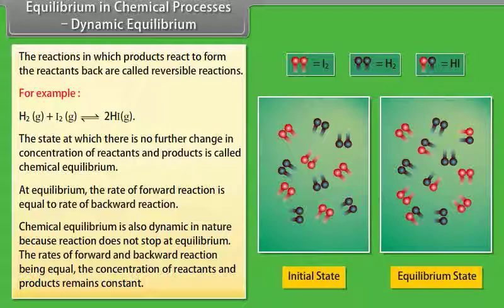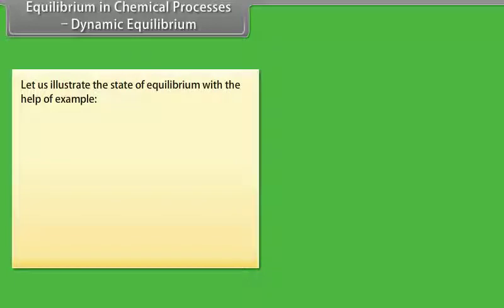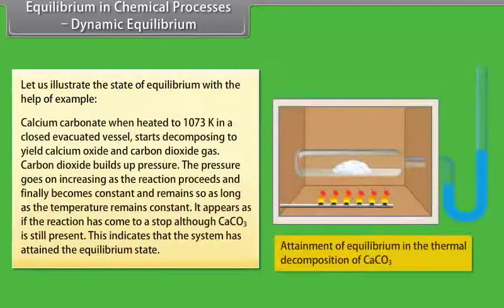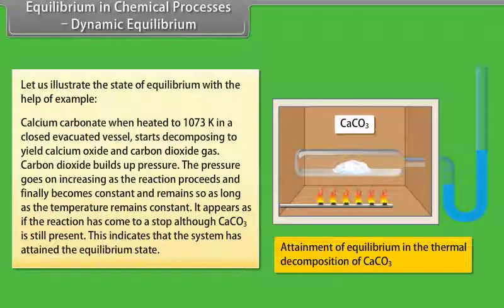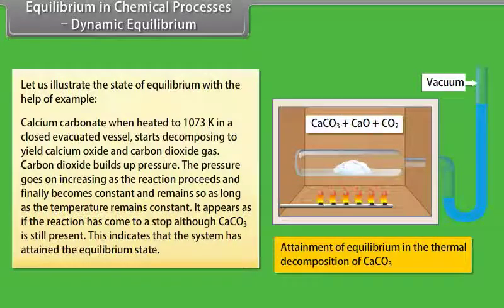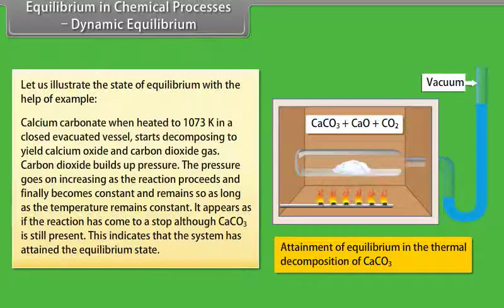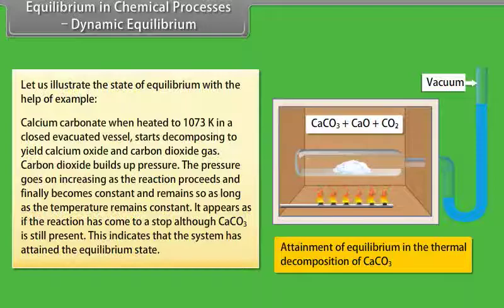The rates of forward and backward reaction being equal, the concentration of reactants and products remains constant. For example, calcium carbonate, when heated to 1073 Kelvin in a closed evacuated vessel, starts decomposing to yield calcium oxide and carbon dioxide gas. Carbon dioxide builds pressure; the pressure goes on increasing as the reaction proceeds and finally becomes constant as long as temperature remains constant. It appears as if the reaction has stopped, although CaCO₃ is still present. This indicates the system has attained the equilibrium state.